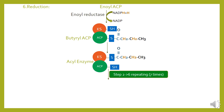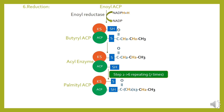Agar yeh long chain fatty acid palmitic acid hai — jo ke 16 carbon containing fatty acid hota hai — to step number 2 to step number 6 ki repetition 7 times hogi, jis se palmitoyl-ACP formed hoga.